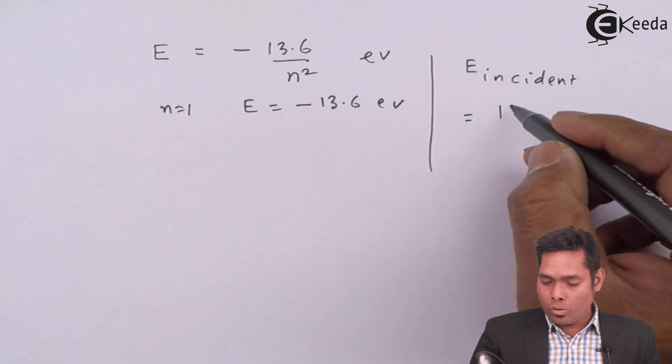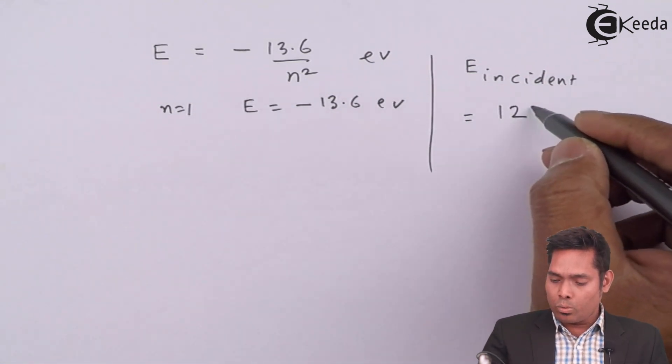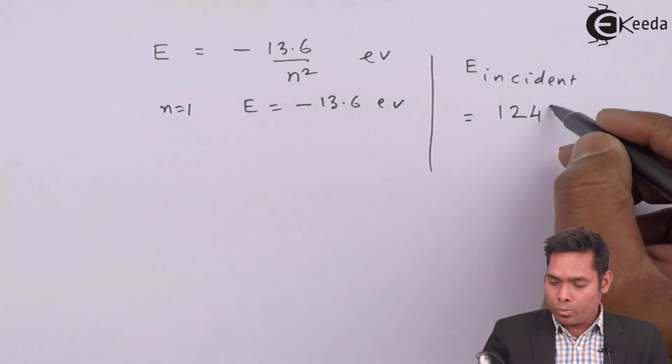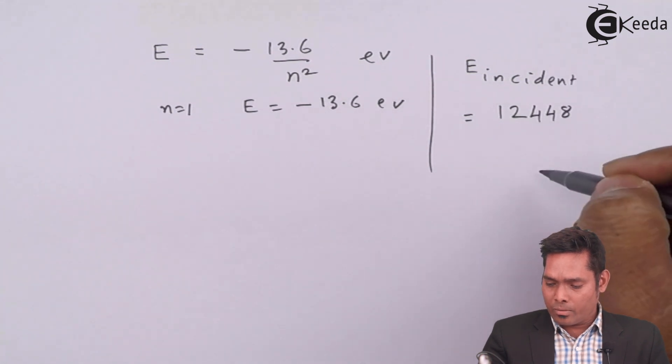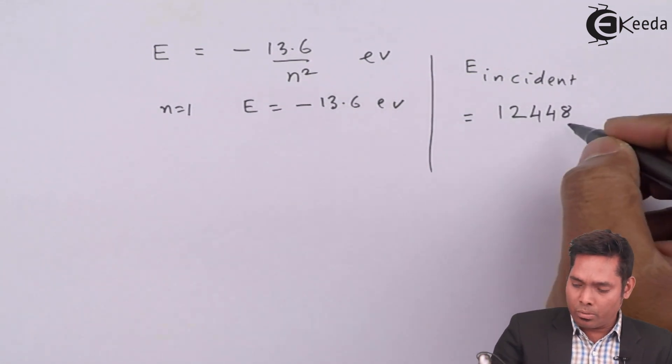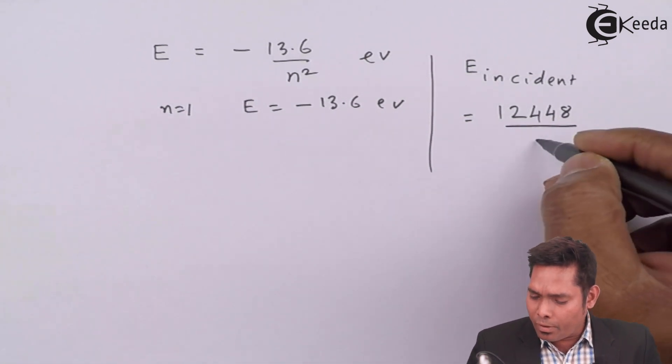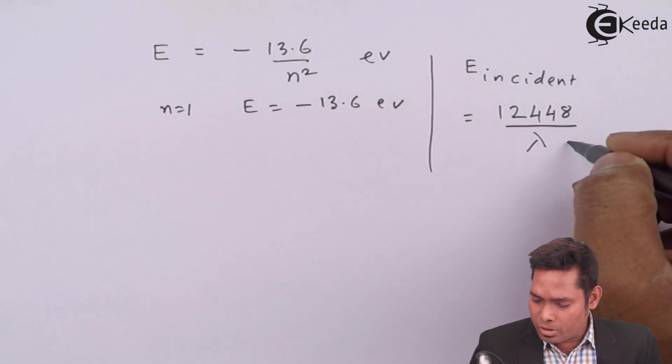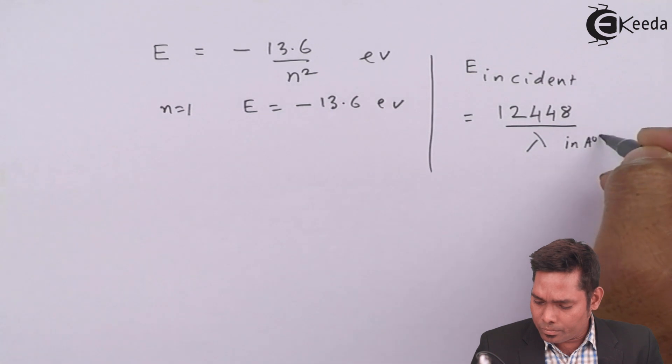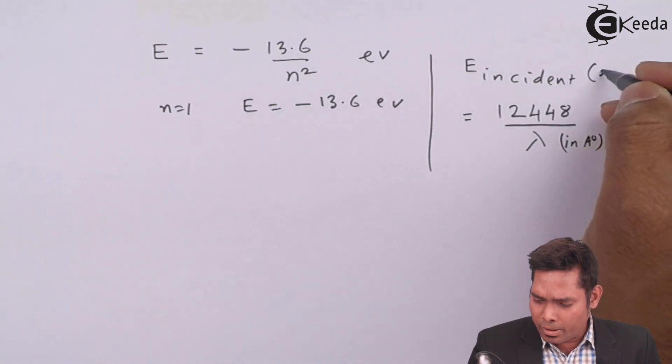then I have to use 12400 or 12448, something like that. You can take 12448 or 12400 divided by wavelength in Angstrom. This is in Angstrom and this energy should be in electron volt.